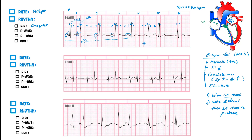Continuing through the strip: normal P wave, same, same — and there's another PAC. How do I know? Decreased R-to-R interval — it came early — and the P wave looks different. PACs are important because you can have them and be completely asymptomatic, but sometimes you can have palpitations.